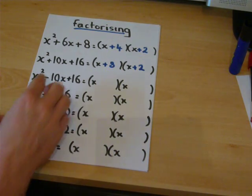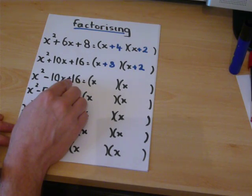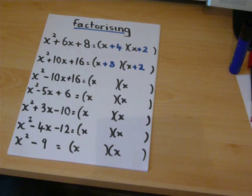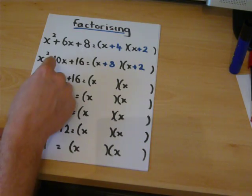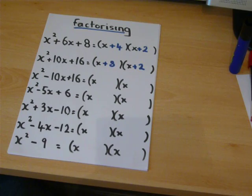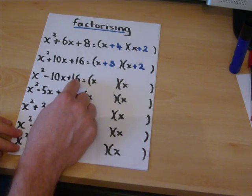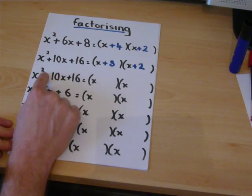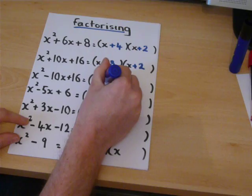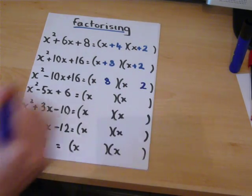Sometimes the signs can change. In the case where just the second sign has changed, the two numbers are timesing to make sixteen and still making ten. So, eight and two are still the correct numbers.